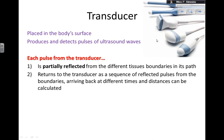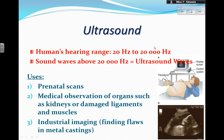Each pulse from the transducer is partially reflected from the different tissues and boundaries in its path. These reflections return to the transducer as a sequence of reflected pulses from the boundaries, and because they arrive at different times, distances can be calculated. This gives you an idea of what is inside the person's body — you get partial reflections from different parts, and this is how you get all those different images, for example of a baby.